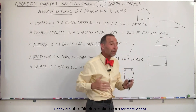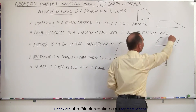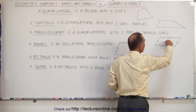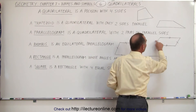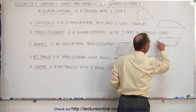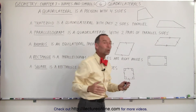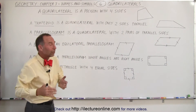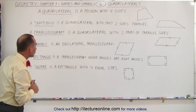In order to have a parallelogram, the two sides that are parallel to one another here must be equal in length, and the two sides over here that are parallel to one another must also be equal to one another in length. Otherwise, you cannot have a parallelogram.